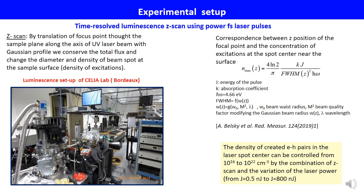Here you can see the luminescence setup of CELIA laboratory. The excitation of the sample is based on the femtosecond AUROR source of CELIA. The correspondence between the Z-position of the focal point of the Gaussian beam and the concentration of excitation at the spot center near the surface N-max is given by a formula depending on the Gaussian laser beam parameters and the absorption coefficient k of the solid. All the details of Z-scan data can be found in the referenced publication.